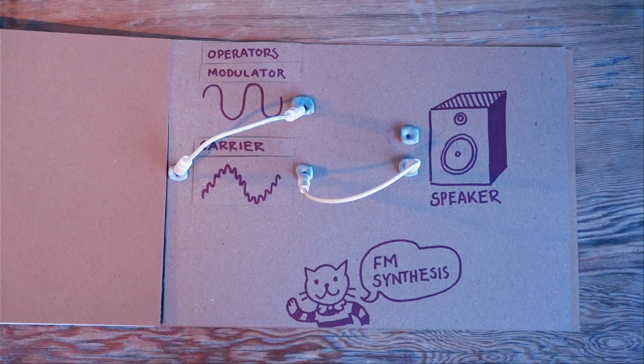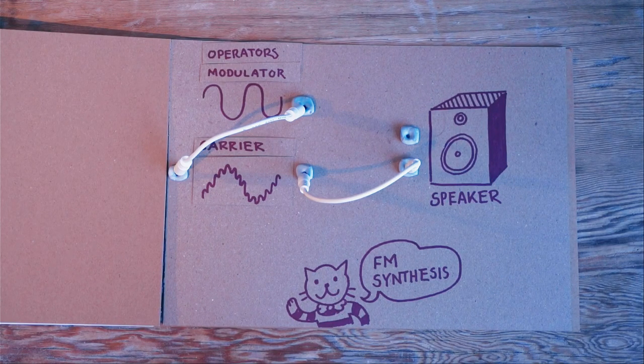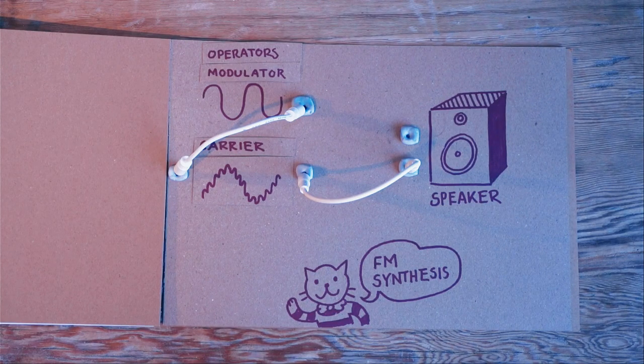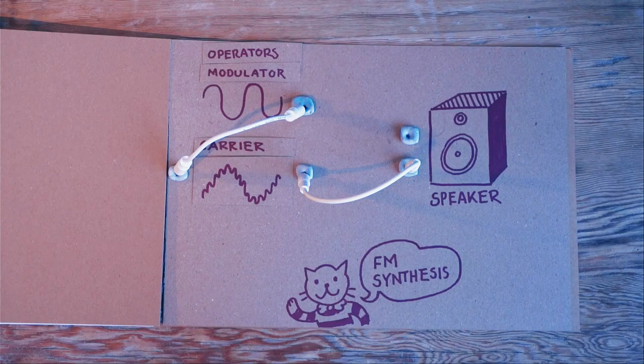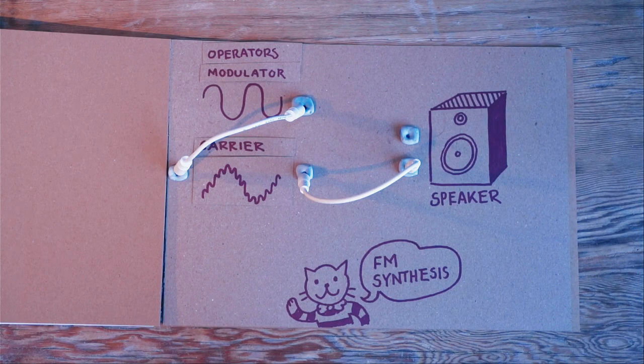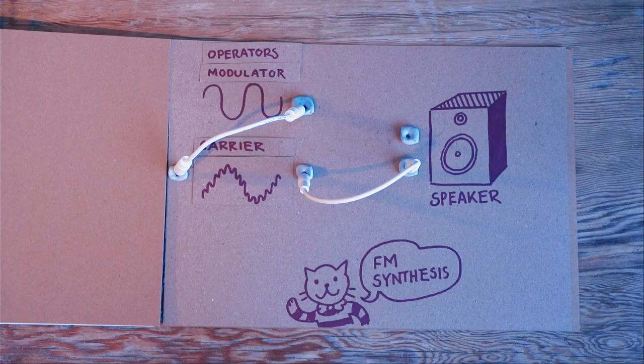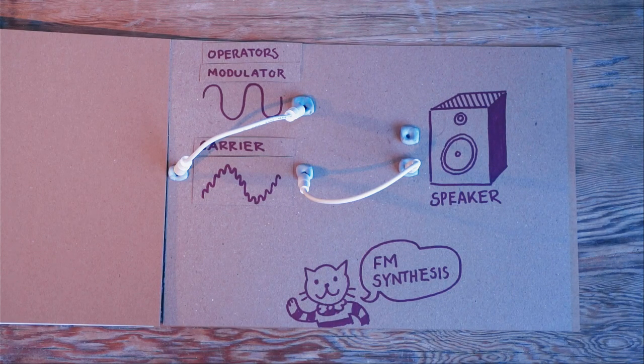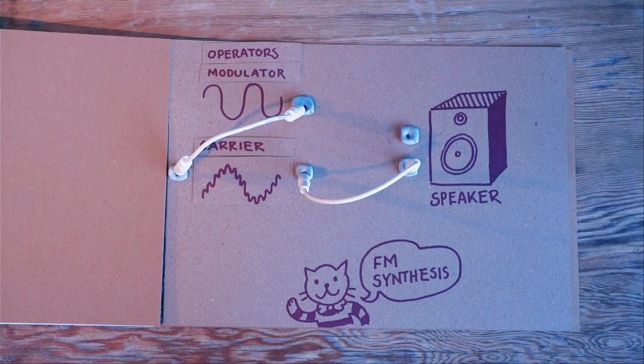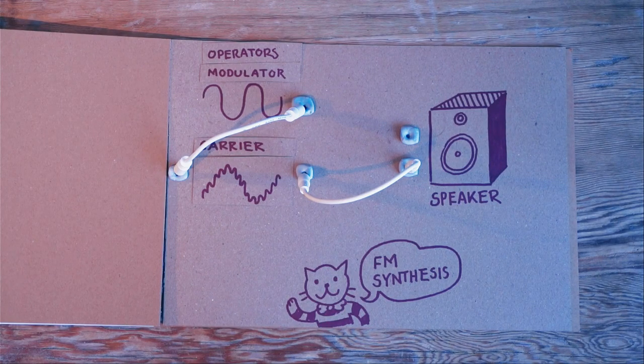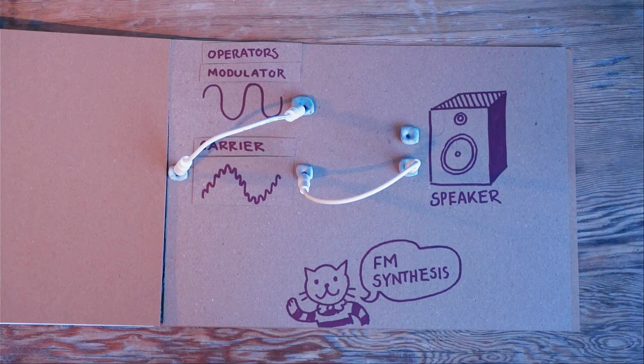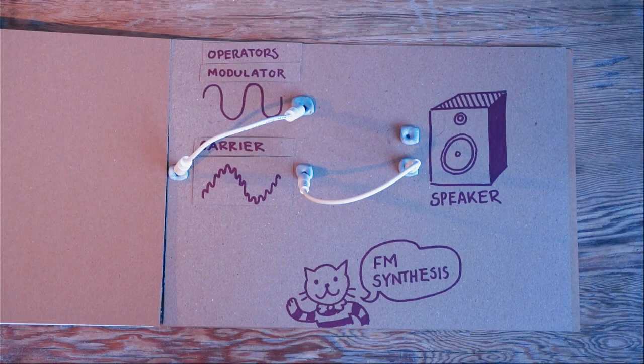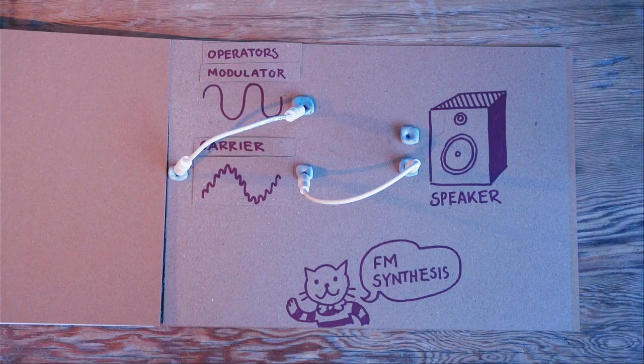A lot of synthesizers have multiple operators. For example, the operator in Ableton has got four, traditional hardware synths like the DX7 has got six. And you can just imagine how complex these sounds can get if you have, let's say, one carrier, that's the signal you hear, and then you have a bunch of other frequencies modulating each other at different speeds. Maybe they have different envelopes that creates really complex sounds.